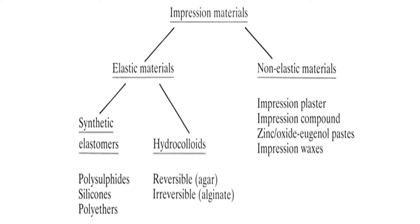Impression materials are classified under elastic and non-elastic materials. In elastic materials, you have synthetic elastomers and hydrocolloids. In synthetic elastomers, you have polysulfide, silicones, and polyethers. Hydrocolloid is reversible; irreversible is alginate. Non-elastic materials include impression plaster, impression compound, zinc oxide eugenol paste, and impression waxes.